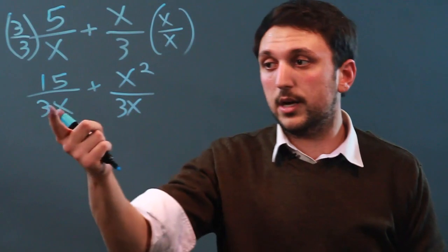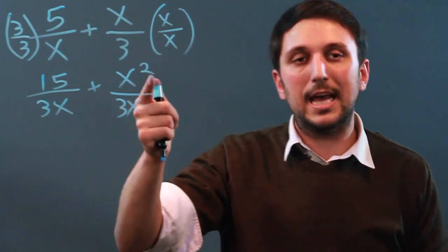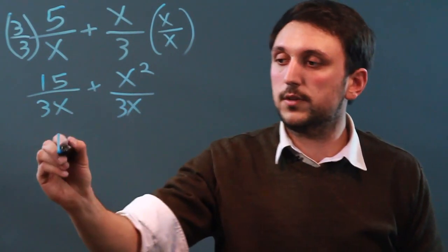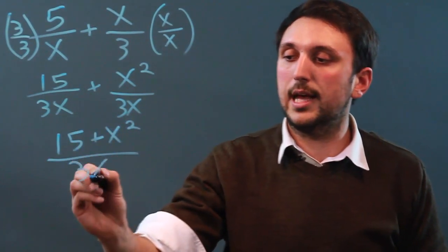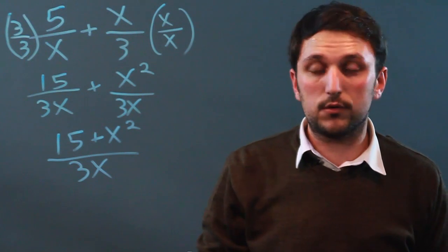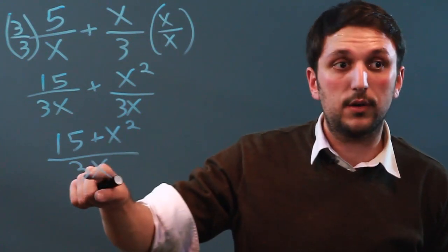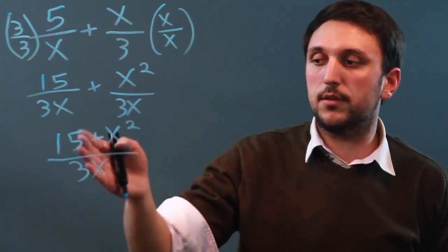So now that our denominators are the same we can add our numerators. So 15 plus x squared over 3x. Now because there's an addition up here and there's no addition down here, we cannot simplify this any further.